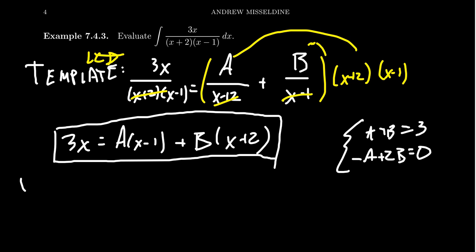What if we pick the very cool number x equals 1? It's very suave. Why is x equals 1 such a good choice? Well, if you plug in x equals 1, the left-hand side becomes 3 times 1, which is equal to 3.